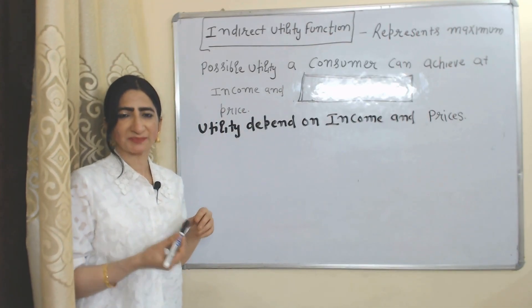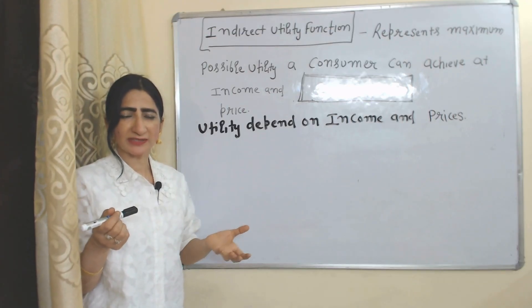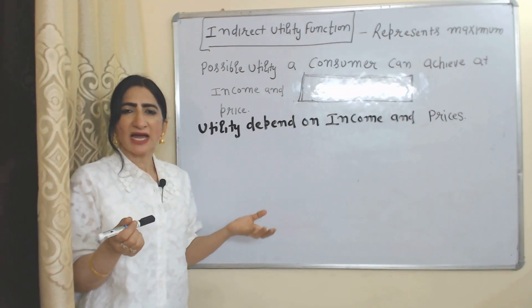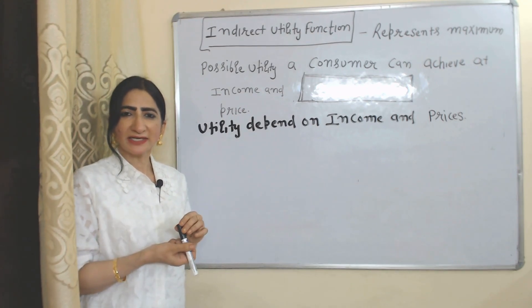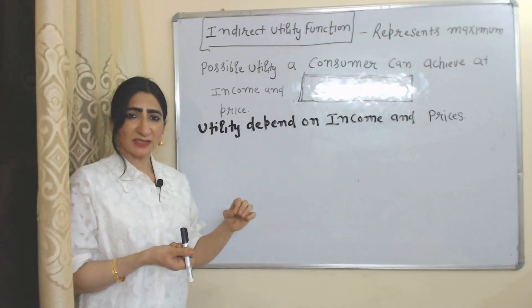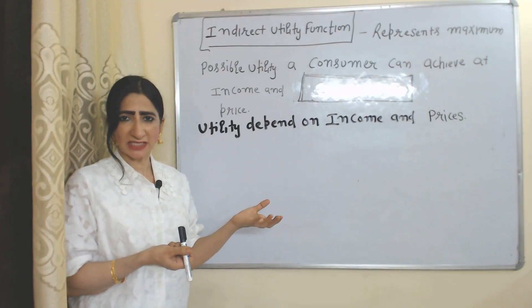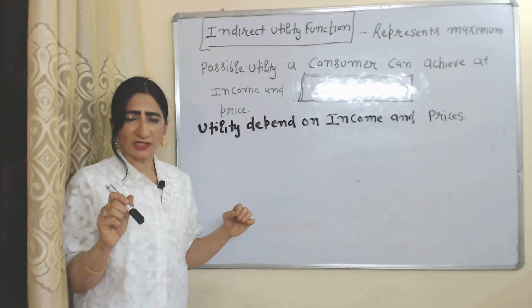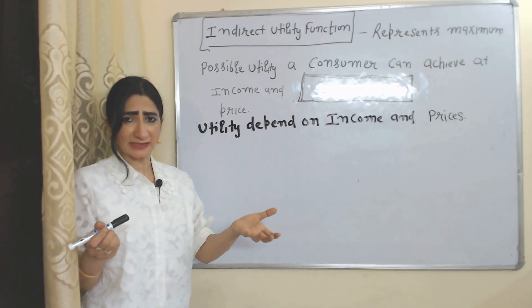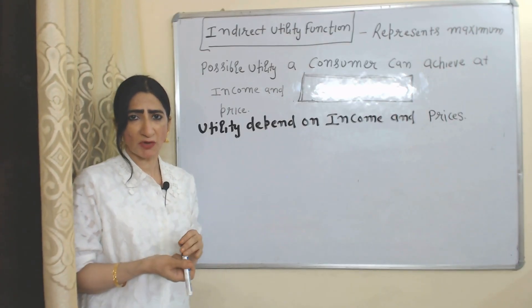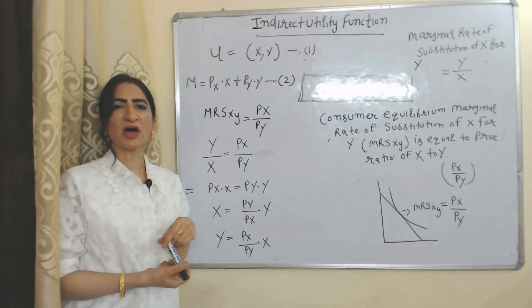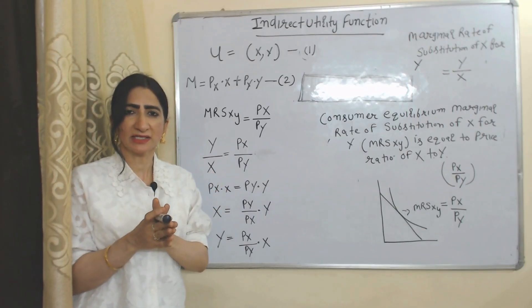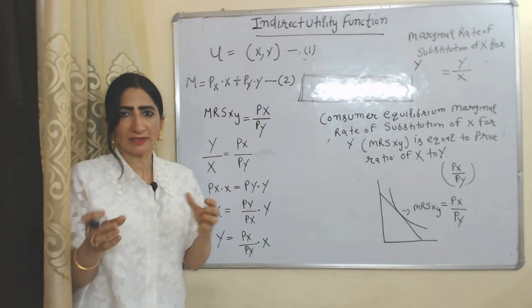Now we will see indirect utility function. Indirect utility function represents the maximum possible utility which a consumer can achieve at given prices and income. That means in the case of indirect utility, utility depends on prices and income rather than direct consumption of goods and services. To derive the indirect utility function, we start with the direct utility function and budget constraint.